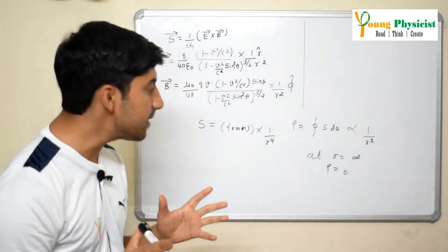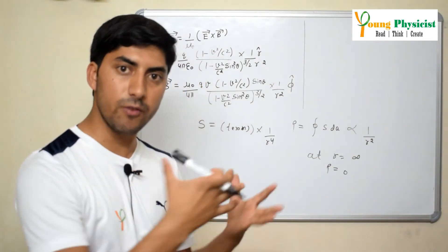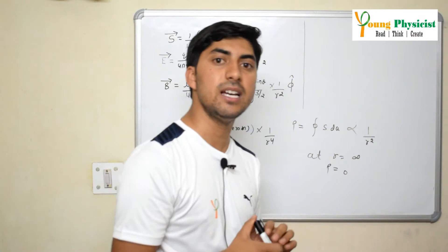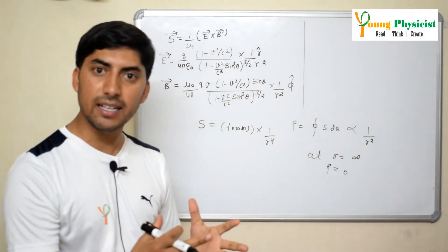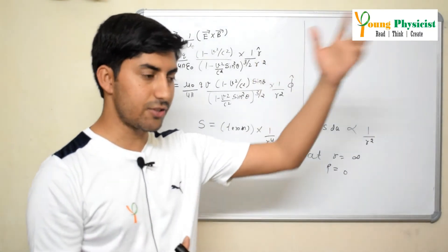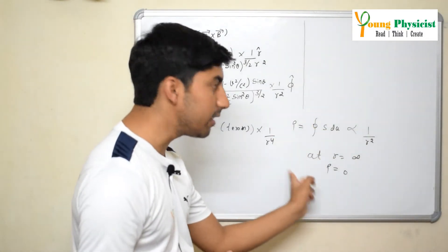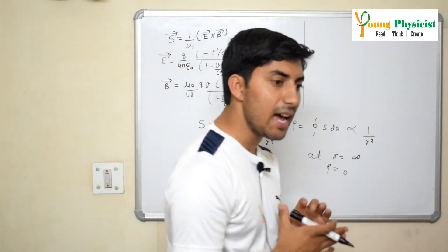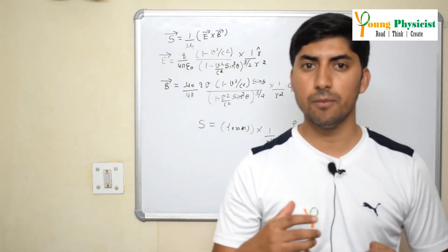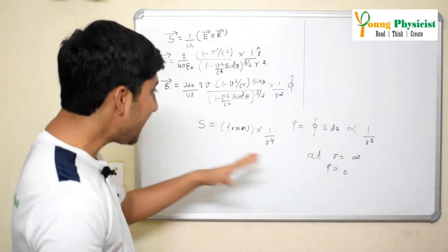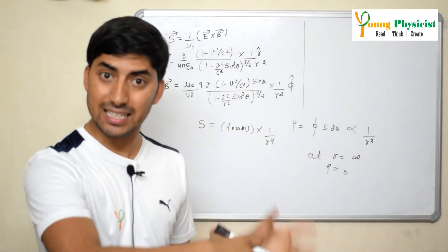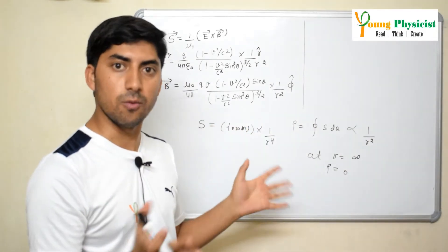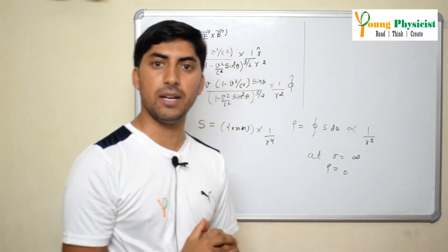What this means is: if you look for the power emitted by a charge particle moving with constant velocity at very large distance or at infinity, the power will be zero. That means this energy cannot be radiation, because radiation is something that leaves the particle and travels to infinity. It doesn't mean the particle doesn't carry energy — it does, but that energy travels with the charge particle; it doesn't leave it like radiation does. So a charge particle moving with constant velocity cannot emit electromagnetic radiation.